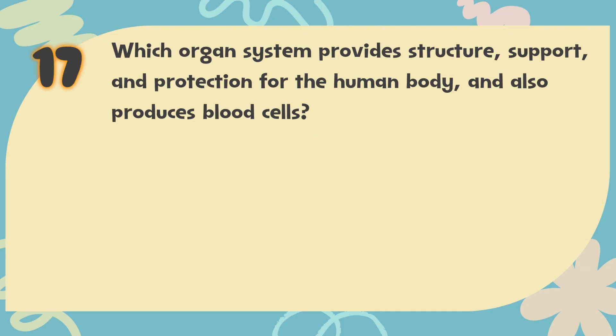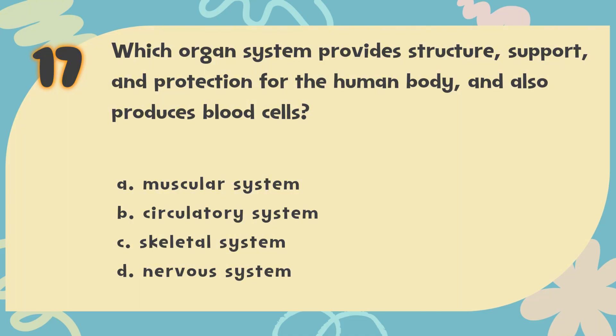Number 17. Which organ system provides structure, support, and protection for the human body, and also produces blood cells? The choices are: A. Muscular system. B. Circulatory system. C. Skeletal system. D. Nervous system.